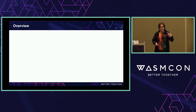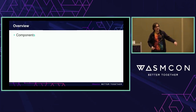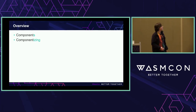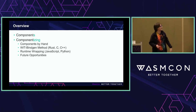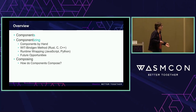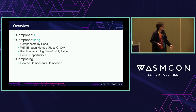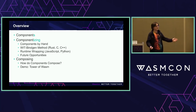The structure of the talk largely follows those two points. First, we're going to explain what components are and how they're structured and represented — what's actually in the guts of a component. Then we're talking about componentizing and walk through a few different approaches to making components, starting from the very bottom and doing it by hand, building up to some future possibilities. Then we're going to talk about composing, and wrap up with a demo where we stack a bunch of Wasm components together.